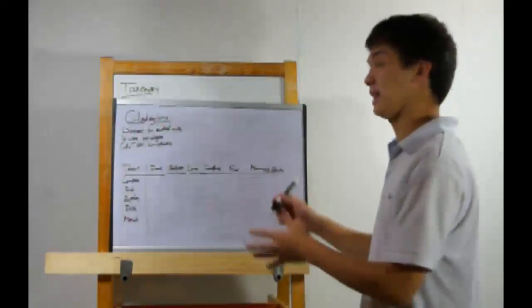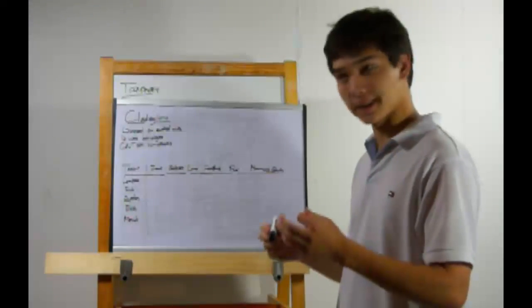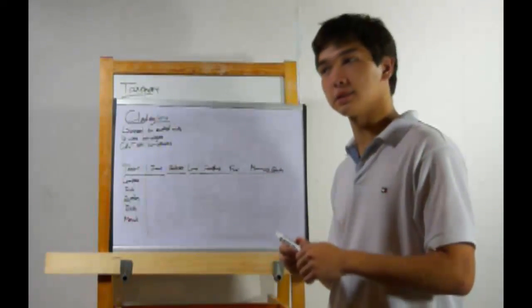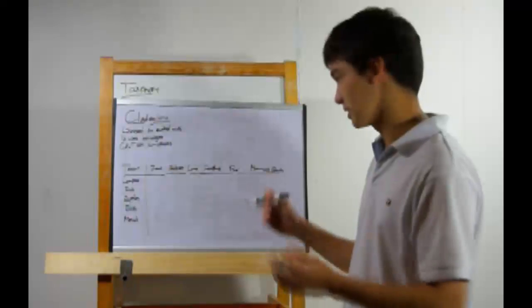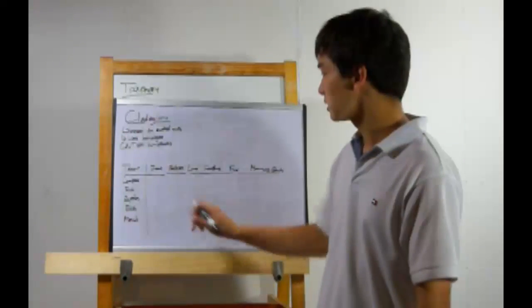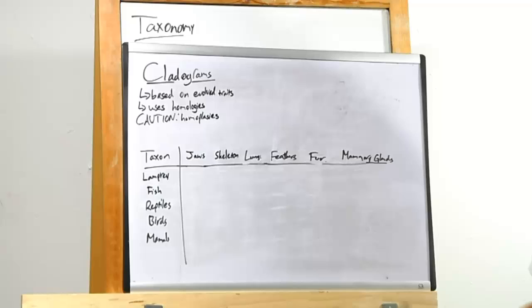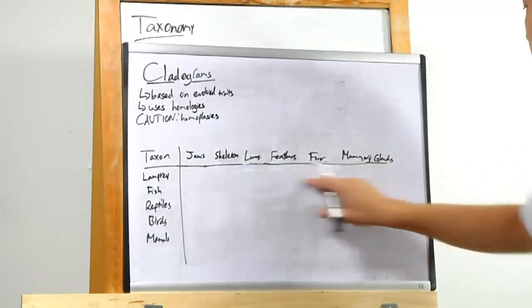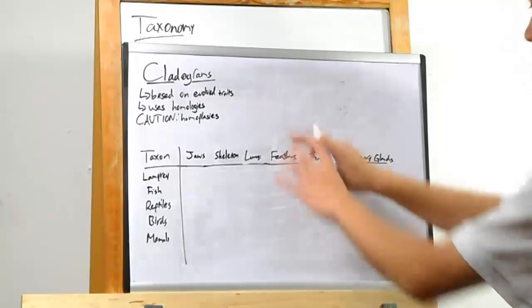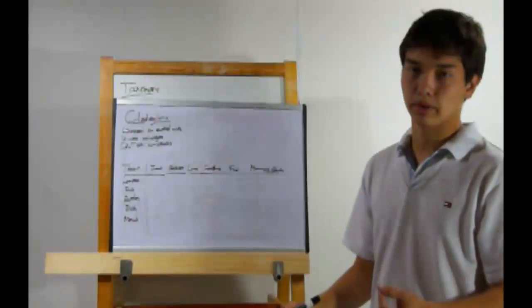Now we're going to make a cladogram. You may have to do this in class — hopefully your teacher will just show them to you, but either way you'll understand it. So here we have our taxons — the things we're going to put in the cladogram. And here we have the traits we're going to look at: jaw, skeleton, lungs, feathers, fur, mammary glands.